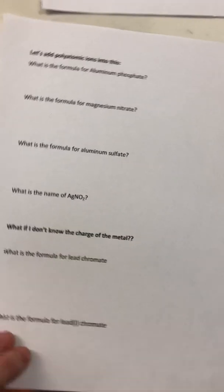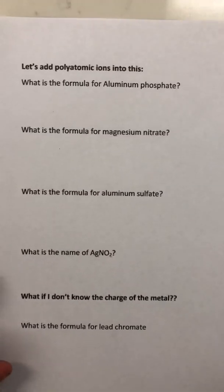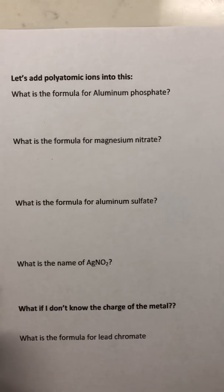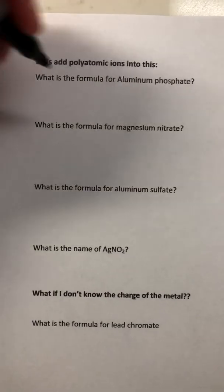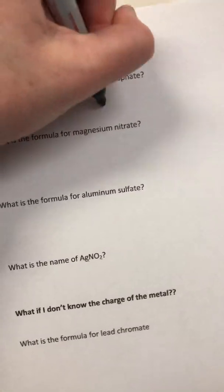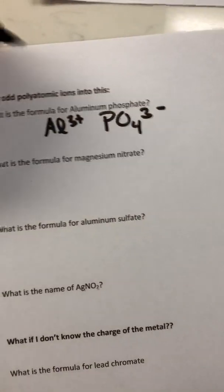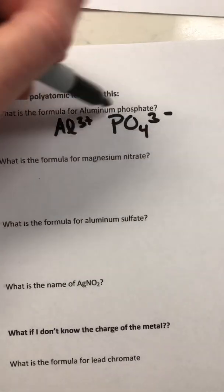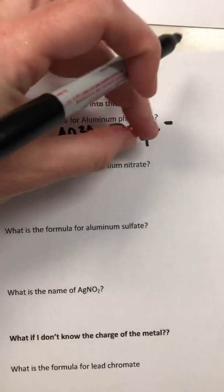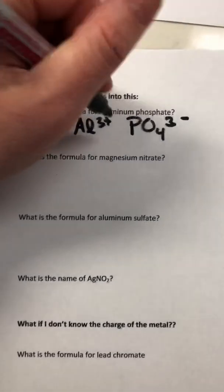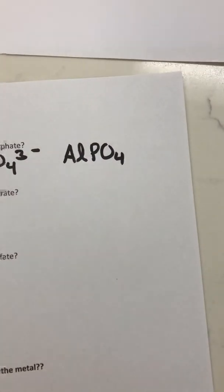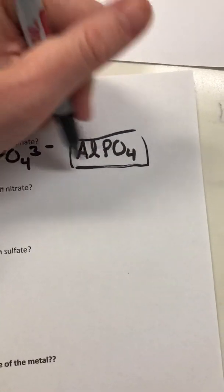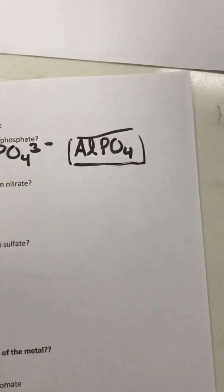Now let's add polyatomic ions. Make sure you've memorized them first. What is the formula for aluminum phosphate? Aluminum has a three-plus charge; phosphate is PO4 with a three-minus charge. A three-positive and a three-negative cancel each other out — you just need one of each. Treat the polyatomic ion as one whole unit. Aluminum phosphate is AlPO4. There should never be a charge written on your completed ionic compound.